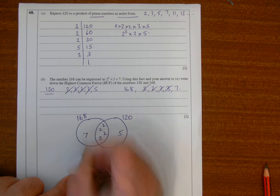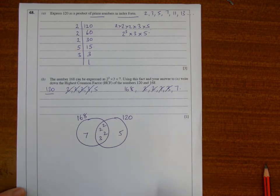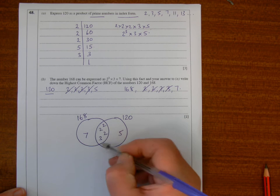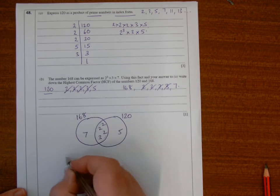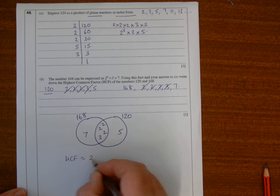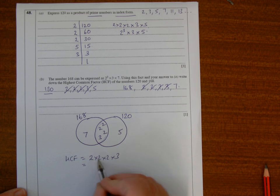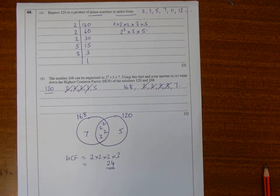The highest common factor would be those numbers in the overlap times together. So the highest common factor is 2 times 2 times 2 times 3. 2 twos are 4, 4 twos are 8, and 8 times 3 is 24. That's the highest common factor of 120 and 168.